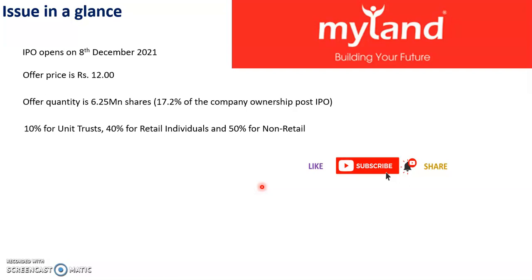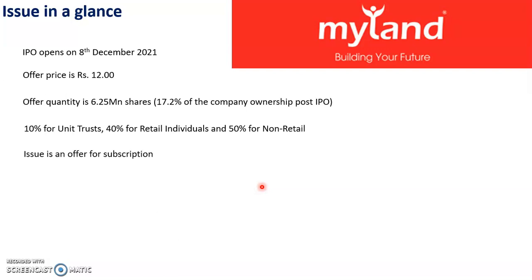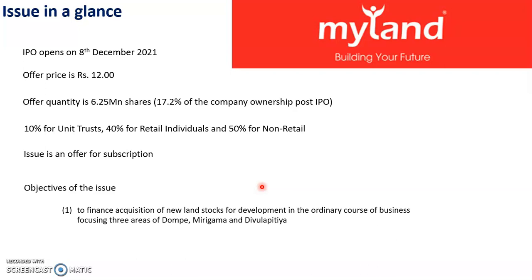2.5 million shares are allocated to retailers. For subscription, you can raise cash for a new fund. General insurance is the main shareholder. If you have a company, you can raise cash, and this cash is used for future business development. Through the prospectus, we can develop a new land stock for 75 million cash.